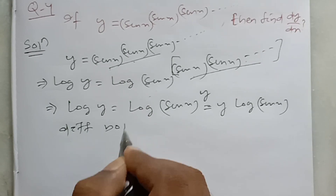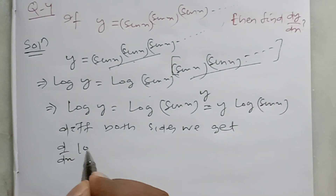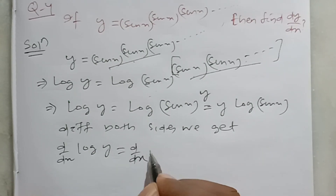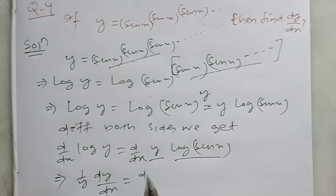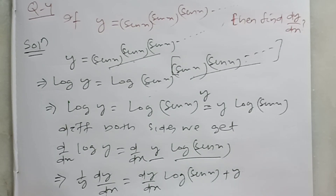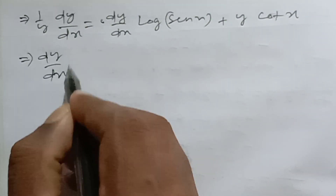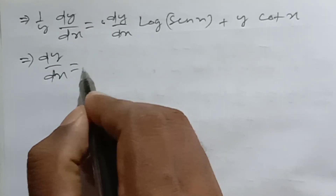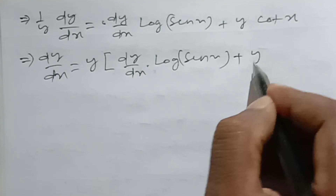So we get: log y = y · log(sin x). Now differentiating both sides: the derivative of log y is 1/y · dy/dx, and the right side uses the product formula — derivative of y is dy/dx into log sin x, plus y into derivative of log sin x, which is 1/sin x · cos x, which gives cot x.